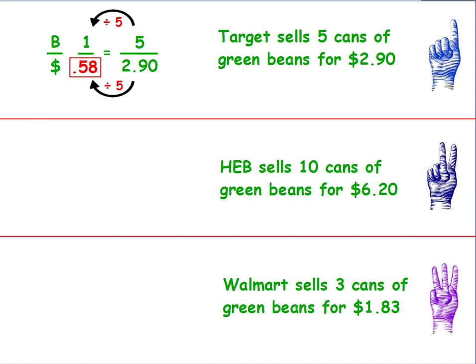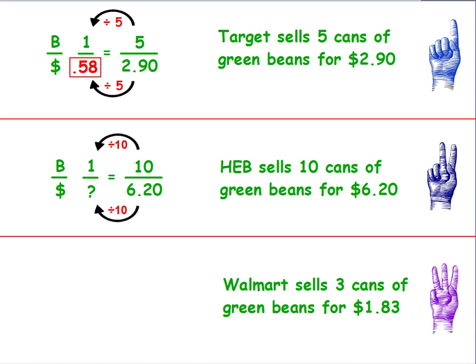Let's try it for HEB. Set up your word fraction. Put the question mark next to the money and the 1 next to how much for one can of green beans. The next ratio straight from the problem: 10 cans for $6.20. Go from what you know to what you don't — it's getting smaller, so divide by 10. Whatever you do to the top, you do to the bottom. Six dollars and twenty cents divided by 10 is $0.62 per can.